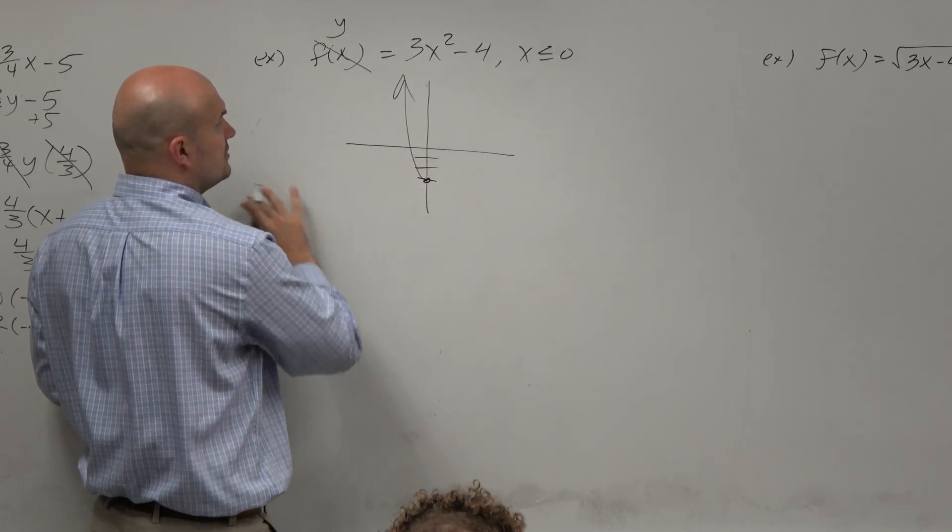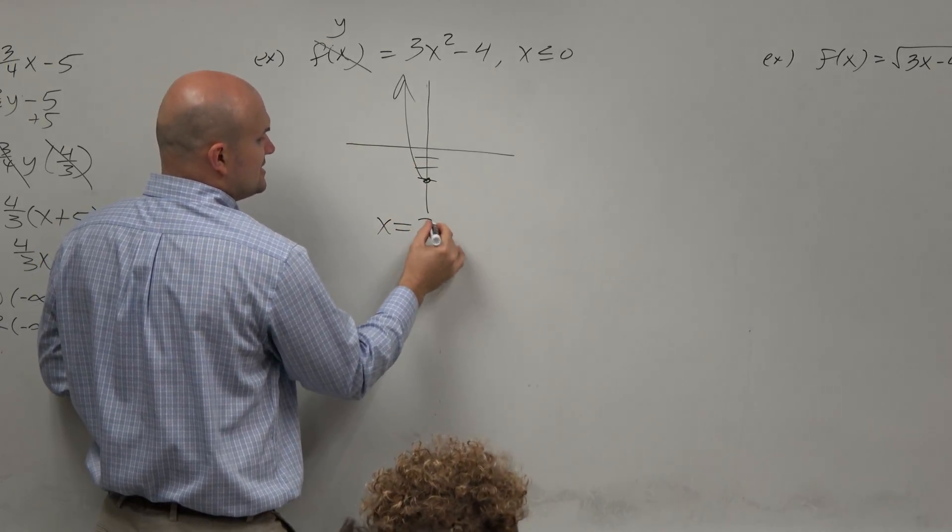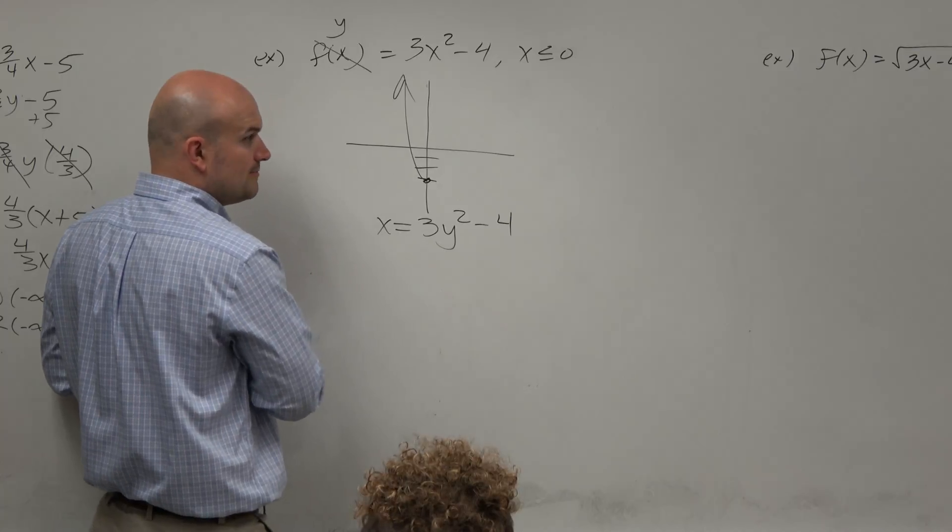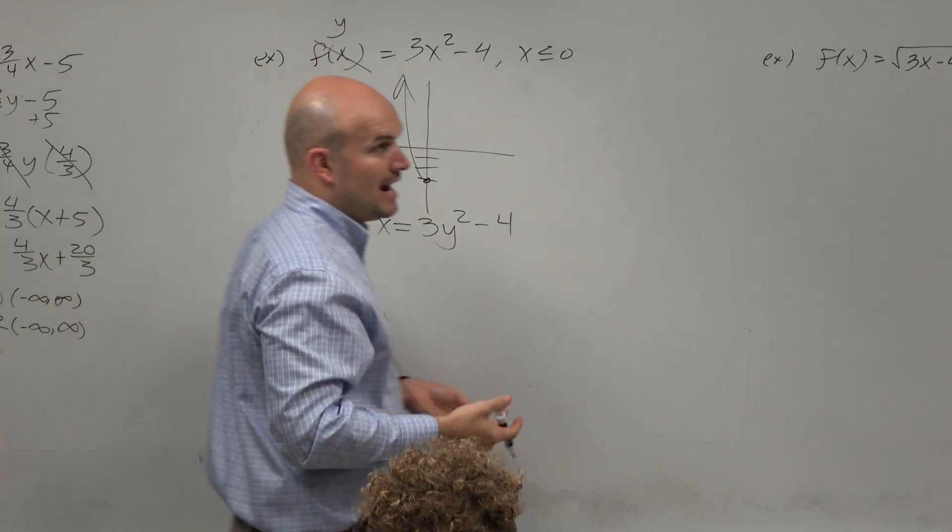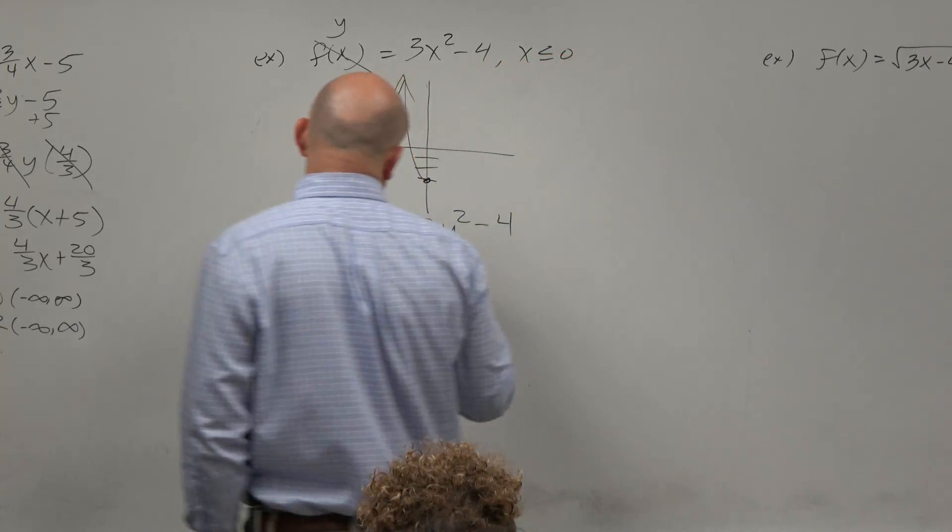Let's actually do the math to find the inverse. Swap that with y, flip the x and y's. x equals 3y squared minus 4, right? So replace f(x) with y, swap the variables. Now just solve for y.